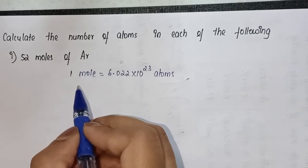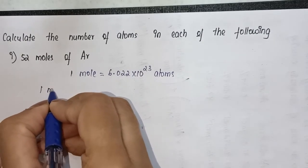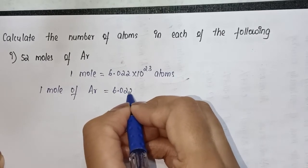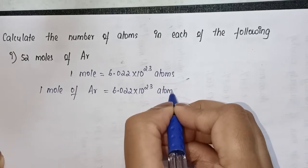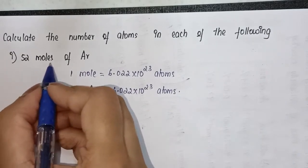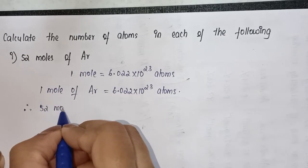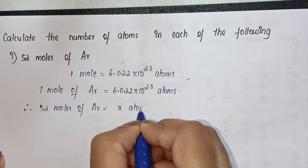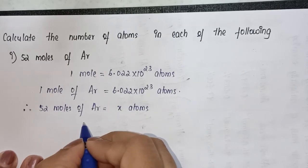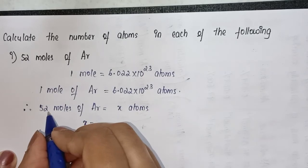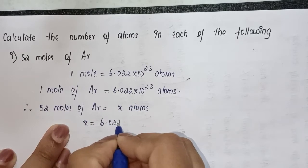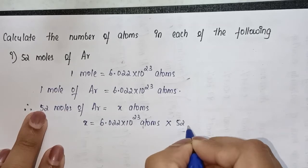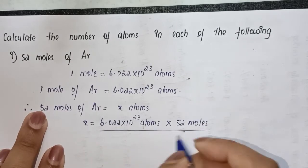Let's write down that one mole of argon is equal to 6.022 × 10²³ atoms. Therefore, 52 moles of argon is equal to x atoms — x is what we are going to find out. Just cross multiply: x = 6.022 × 10²³ atoms × 52 moles divided by 1 mole.